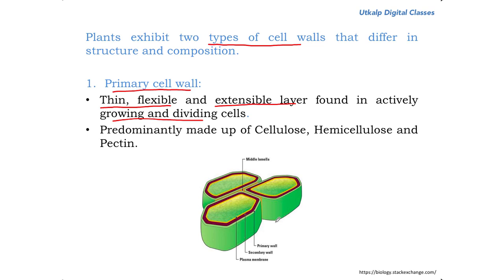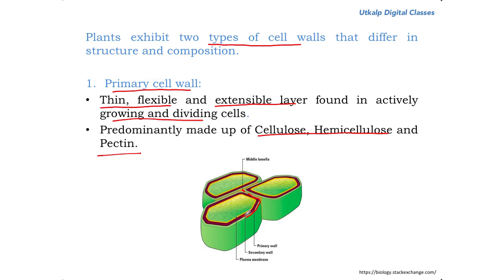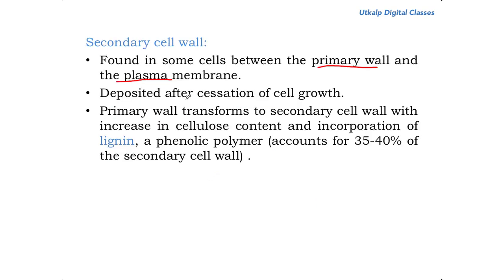A growing and dividing cell requires a lot of expansion and extension, which is only permitted by the primary cell wall. In the figure, next to the yellow-colored middle lamella, the green-colored structure is the primary cell wall — predominantly made up of cellulose, hemicellulose, and pectin. The secondary cell wall is found in some cells between the primary wall and the plasma membrane. This brown-colored structure in the figure is the secondary cell wall, deposited only after the cessation of cell growth.